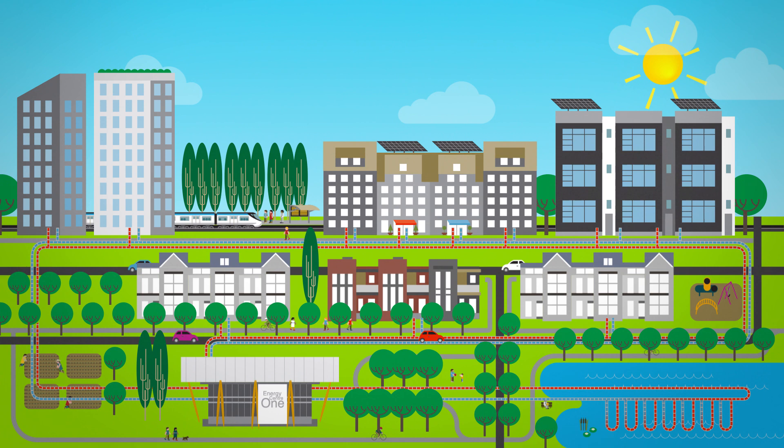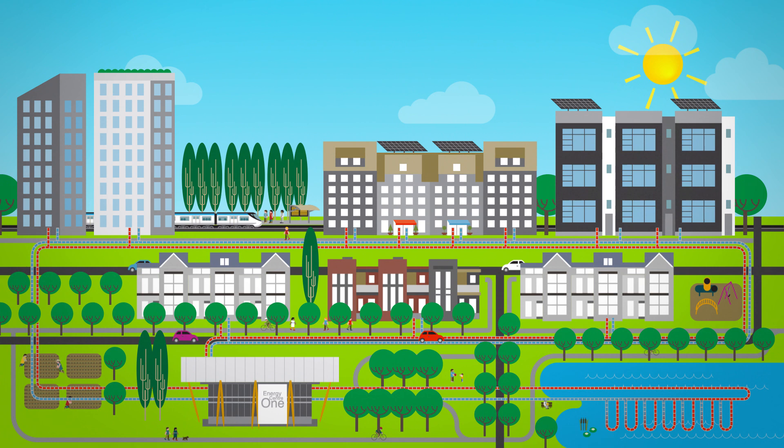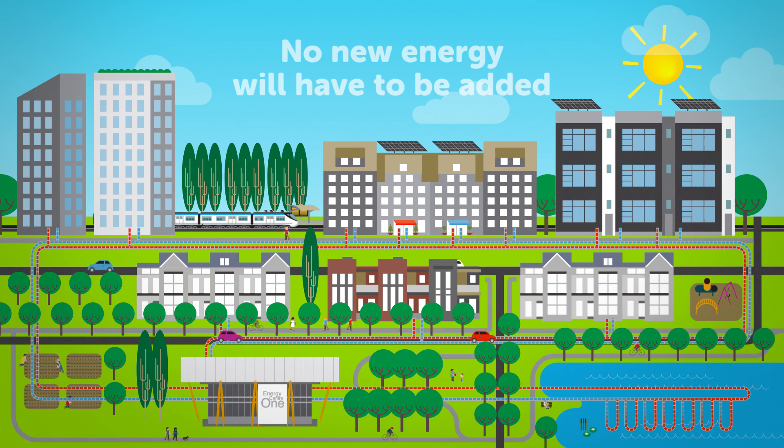During certain times of the year, the community heating and cooling energy needs will balance each other out, so no new energy will have to be added to the system. Essentially, the entire neighborhood's heating and cooling needs will be met by recycled, shared energy.